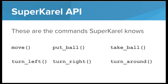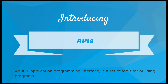These are the commands that Super Carol knows: move, put ball, take ball, turn left, and now turn right and turn around. Now you may have noticed that I snuck in the word API in the title of this slide, so let's talk about what exactly an API is. An API is an application programming interface — it's just a set of tools for building programs.